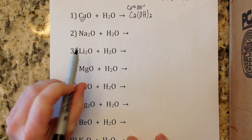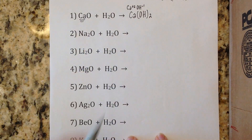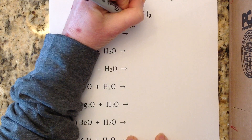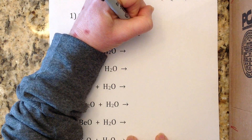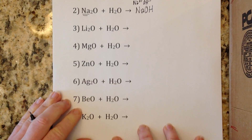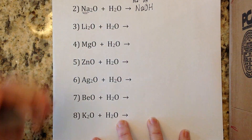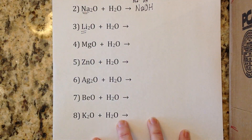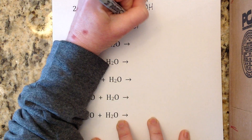Number two: sodium oxide in water — a metal oxide-water reaction. The metal is sodium, so crisscross sodium with hydroxide to get the base, which is NaOH. Number three: lithium oxide with water — again a metal oxide-water reaction. Lithium has a plus one and hydroxide is OH⁻¹; when crisscrossed the ones cancel and you get LiOH.